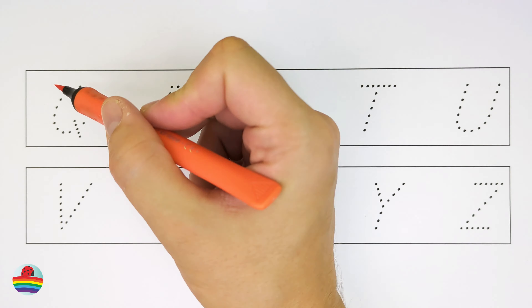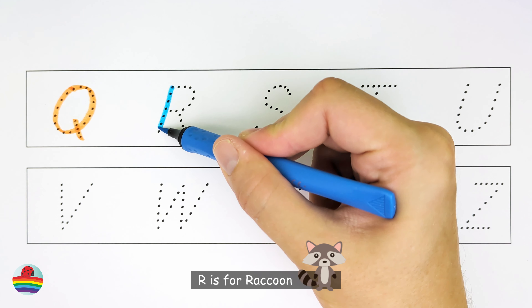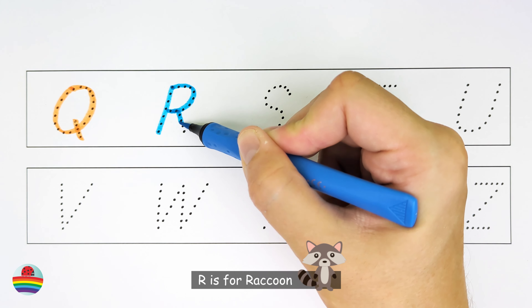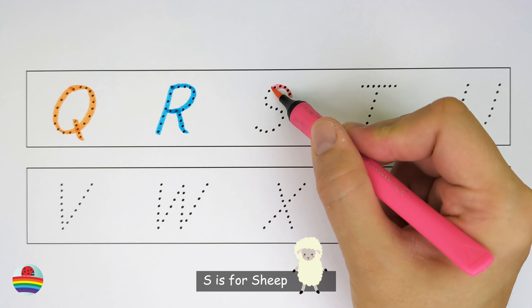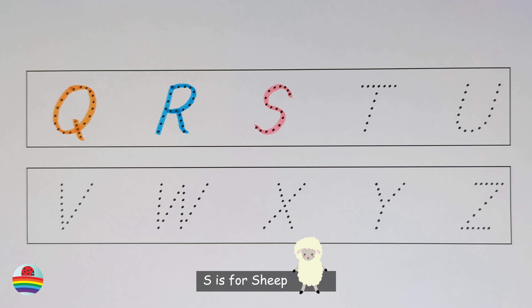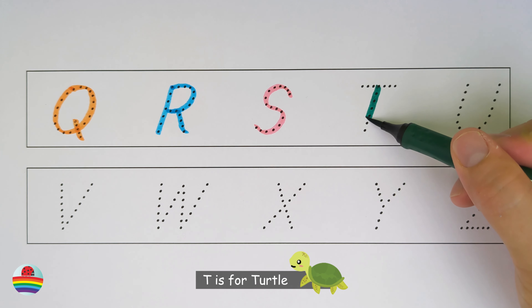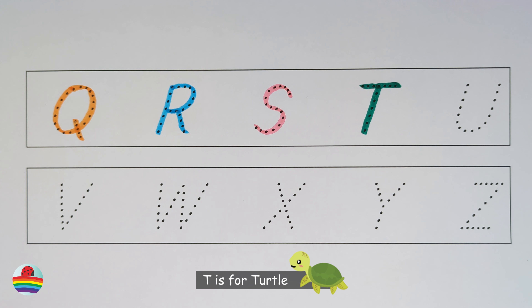Q. Q is for quail. Q. R. R is for raccoon. R. S. S is for sheep. S. T. T is for turtle. T.